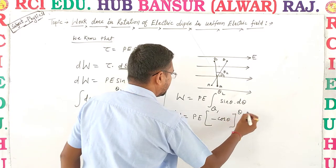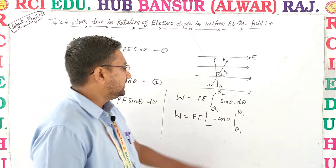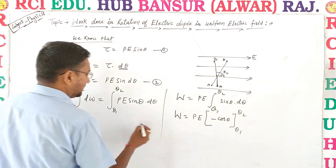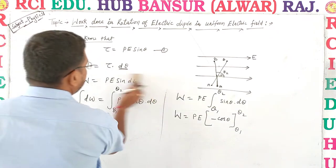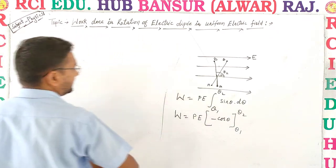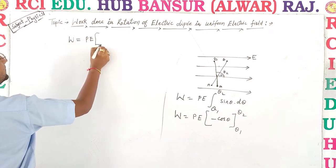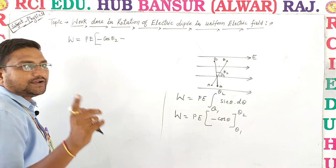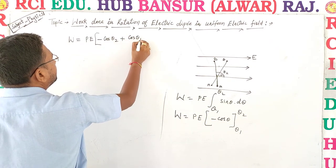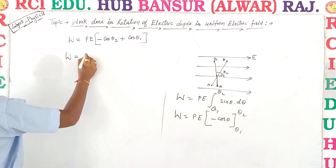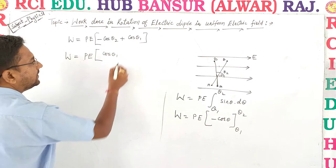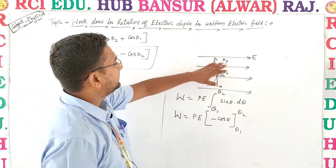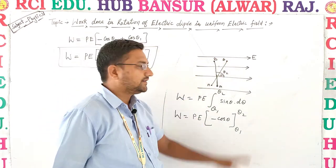Substituting limits — first the upper limit theta2, then the lower limit theta1 — we get: W = pE × (−cosθ2 − (−cosθ1)) = pE(cosθ1 − cosθ2). This is the work done when a dipole is rotated in a uniform electric field.